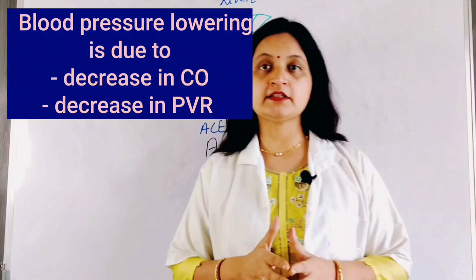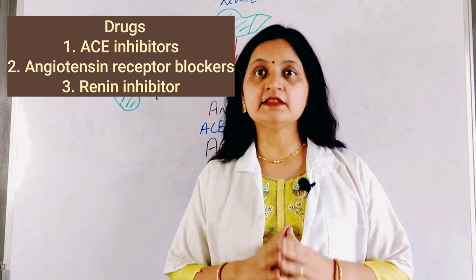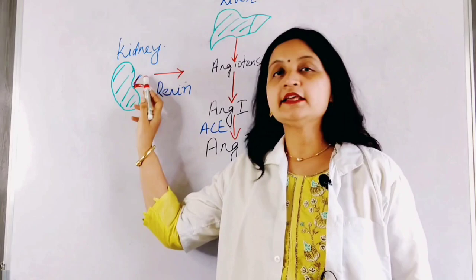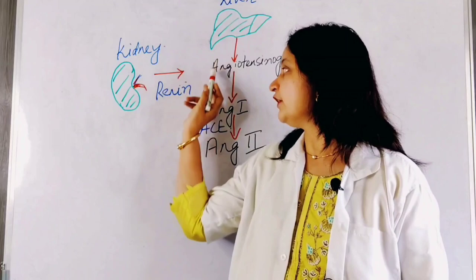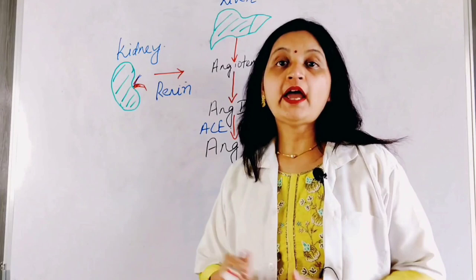Starting with the drugs that block the renin-angiotensin-aldosterone system, these include the angiotensin-converting enzyme inhibitors, the angiotensin receptor blockers, and the renin inhibitor. The figure shown here illustrates the functioning of the renin-angiotensin system. Renin is secreted from the kidney and converts angiotensinogen from the liver to angiotensin-1, which in the presence of angiotensin-converting enzyme gets converted to angiotensin-2.